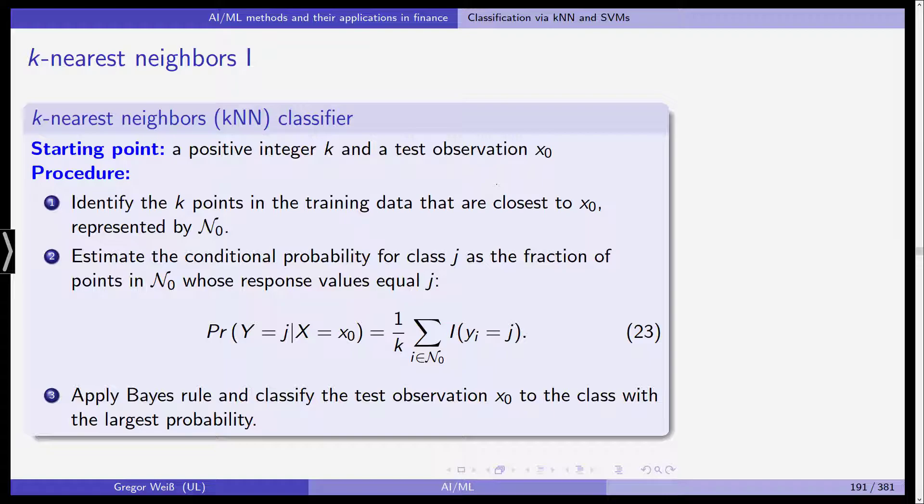And this is why it's called K-nearest-neighbors. You take the observation x0, you look at the k, for example the three closest nearest neighboring points, and you see, for example, if we have a five nearest neighbor classifier and we observe that the five nearest points to a test observation are belonging to, let's say one is belonging to the class and four are not belonging to this first and only class, then it's one out of five. And this is our estimated conditional probability for class j. We then apply Bayes' rule and classify the test observation x0 to the class with the largest probability.